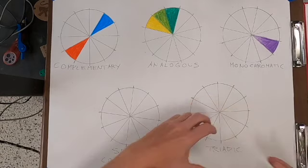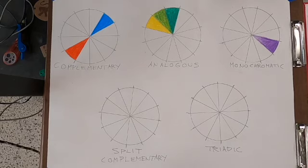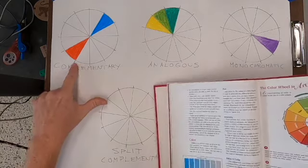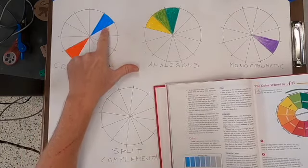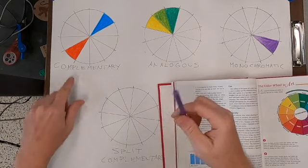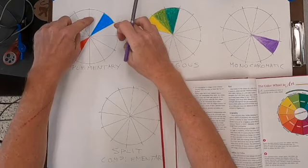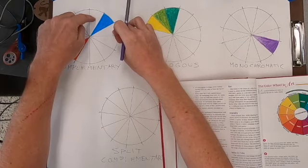Done - monochromatic, easy peasy. Now these might be a little bit more tricky for you. Split complementary: complementary was straight across, opposite. When we come straight across, instead of doing the one that's actually straight across, we'll do those two that are next to it.